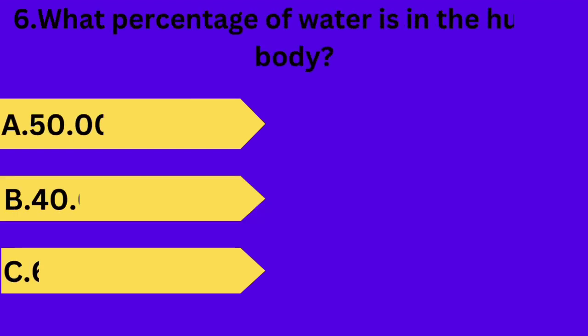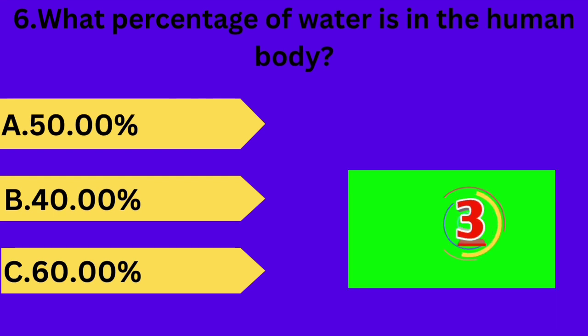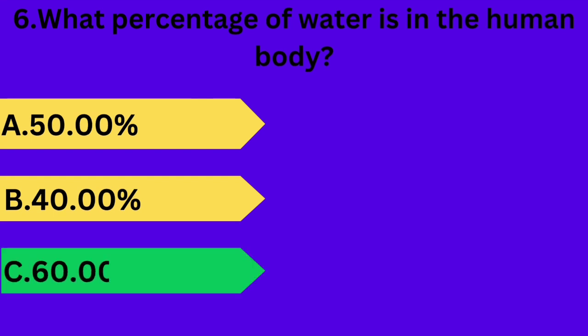And next question is: what percentage of water is in the human body? Option A: 50%. Option B: 40%. Option C: 60%. Your time starts now. Answer is option C: 60%.